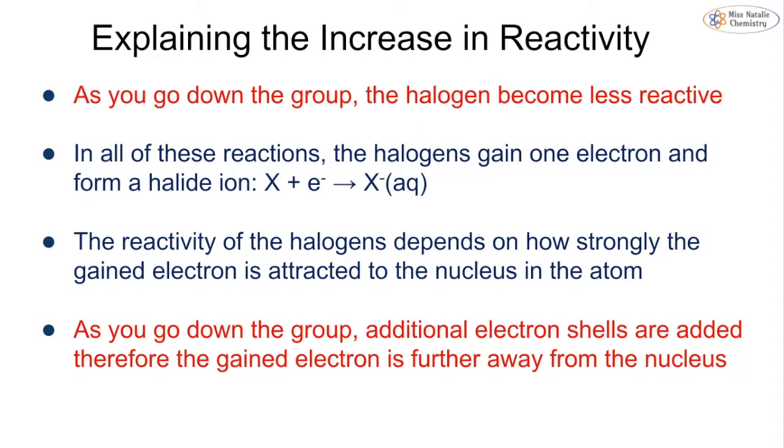As you go down the group, we know that the halogens become less reactive. In all of the reactions when a halogen reacts to form an ion, the halogens are going to gain one electron and form a halide ion. So you can see that being formed here where X is just any of the halogens, so it could be fluoride, chloride, bromide, or iodide. Remember, we don't really talk about astatide when we're discussing the halogens.